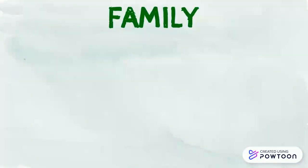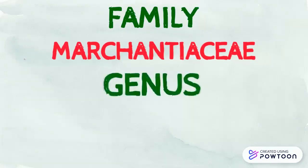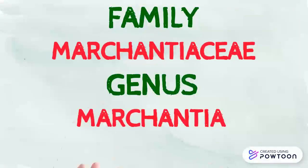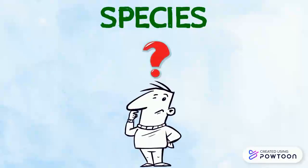The family that Marchantia is part of is called Marchantiaceae. Wow, the words just keep getting longer! This family only includes the genus Marchantia. Because the genus Marchantia is so specific, it's hard to know just by looking at the plant in my backyard what the species is exactly, so I'm not sure what kind of Marchantia it could be.